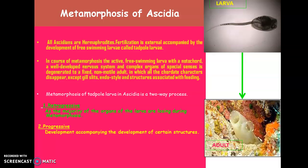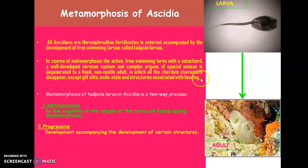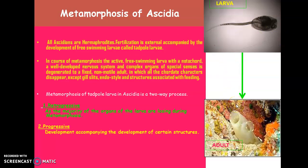Whenever it becomes converted into a non-motile adult, it will possess only those structures which are present in the larva. The gill slits, endostyle, and the structures associated with feeding are only retained in the adult stage. But the rest of the characters which are present in the larva are getting degenerated during this transition. So this is called metamorphosis.